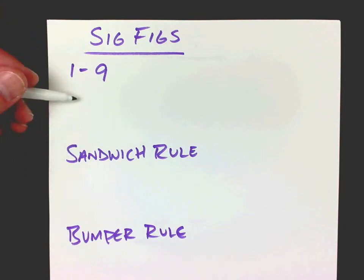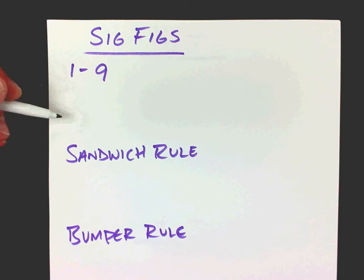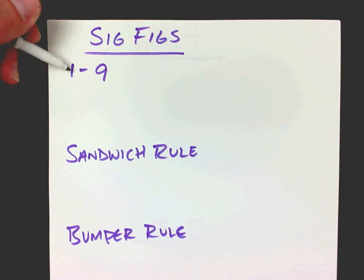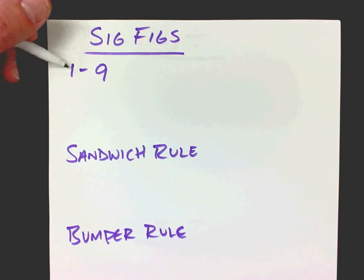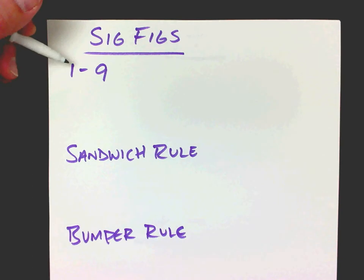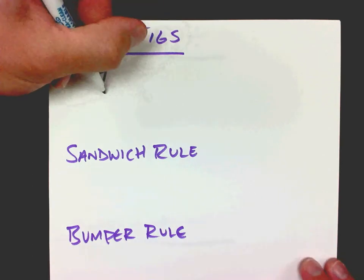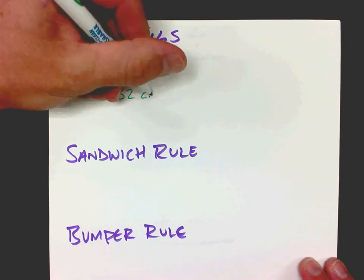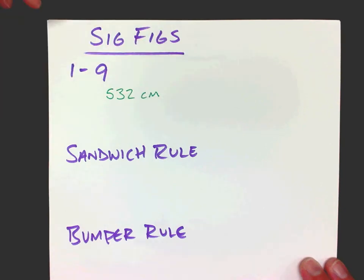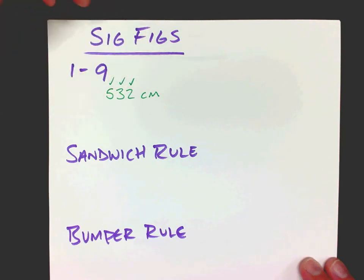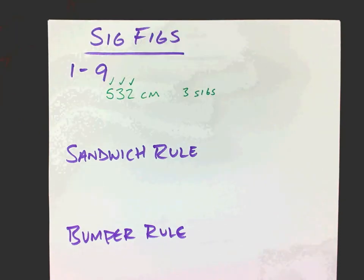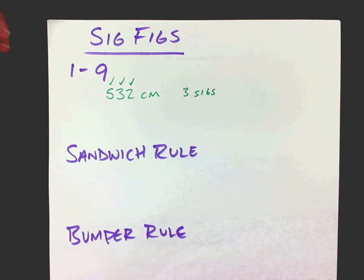I'm going to do a quick run-through of the rules, then we'll look at multiply, divide, add, and subtract. The digits 1 through 9 are easy — any time you see one of these digits, it's significant and we count it as a significant figure. So if we have a measurement of 532 centimeters, we have a 5, a 3, and a 2 — that's 3 significant figures, 3 sig figs.